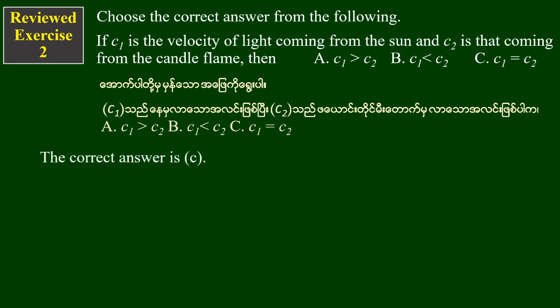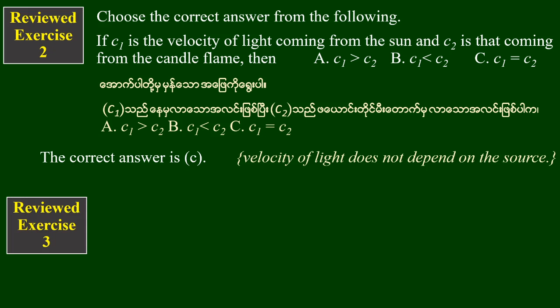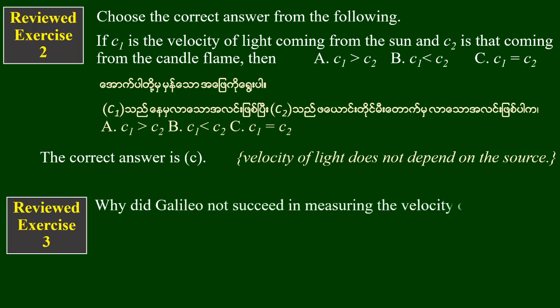The correct answer is B. The velocity of light does not depend on the source. The correct answer is: why did Galileo not succeed in measuring the velocity of light?